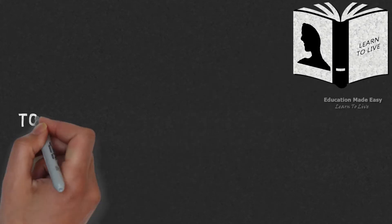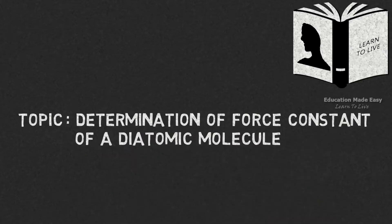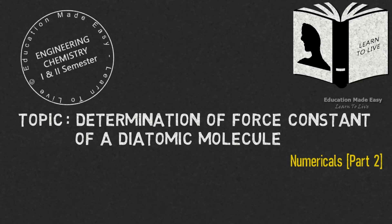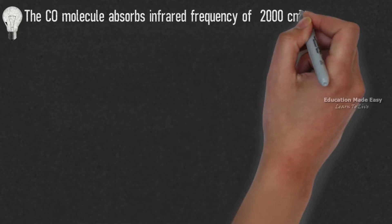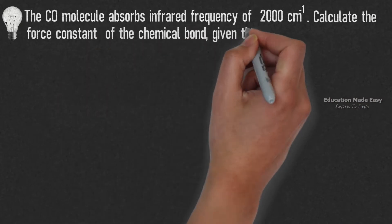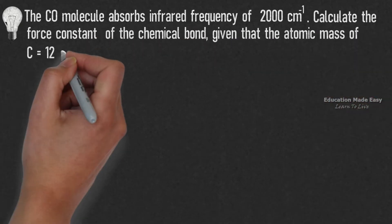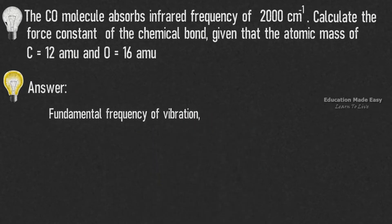Welcome to Learn to Live. This video is based on the topic: determination of the force constant of a diatomic molecule, Numericals Part 2. Question: the CO molecule absorbs infrared frequency of 2000 cm⁻¹. Calculate the force constant of the chemical bond, given that the atomic mass of C = 12 amu and O = 16 amu. Let's find the solution.